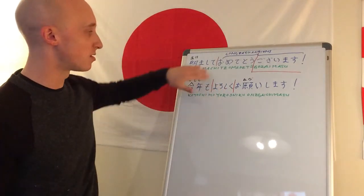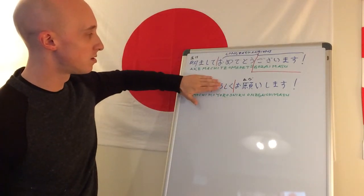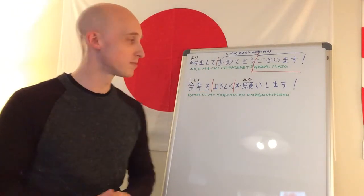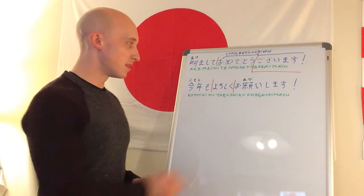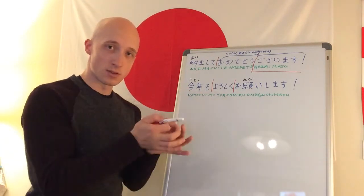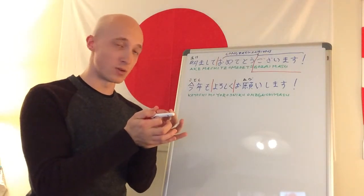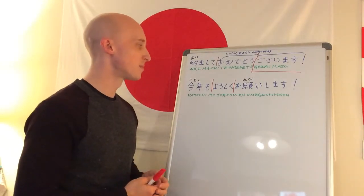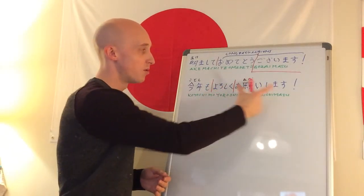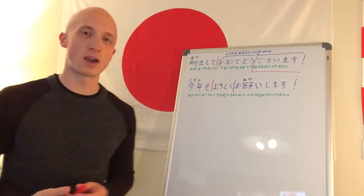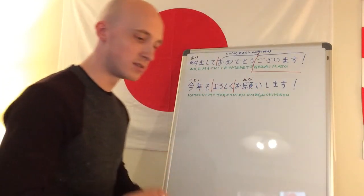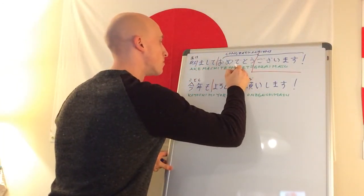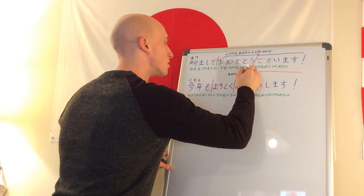And now we have this word yoroshiku. So again, let's use the same trick just for this word. Ku, shiku, roshiku, yoroshiku. This comes from a word which is related to the regular Japanese word for good, which is ii or yoi, but it is a more formal word, a somewhat older word. So now we have this yoroshiku onegaishimasu. As a phrase, yoroshiku onegaishimasu basically means best wishes.